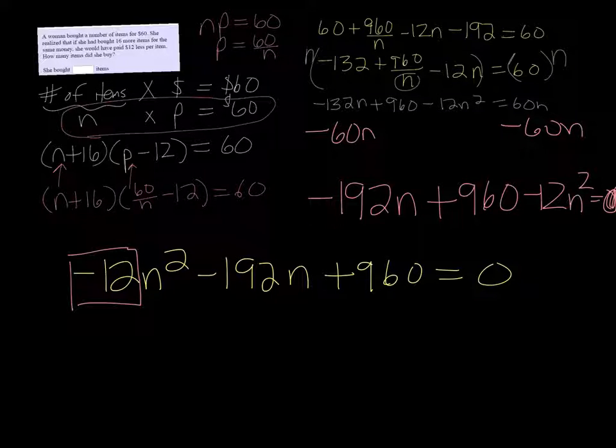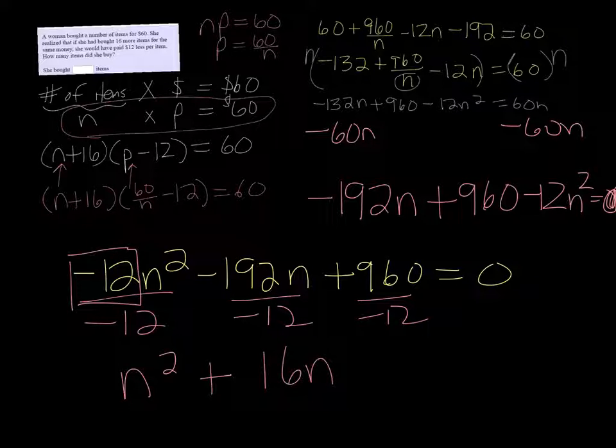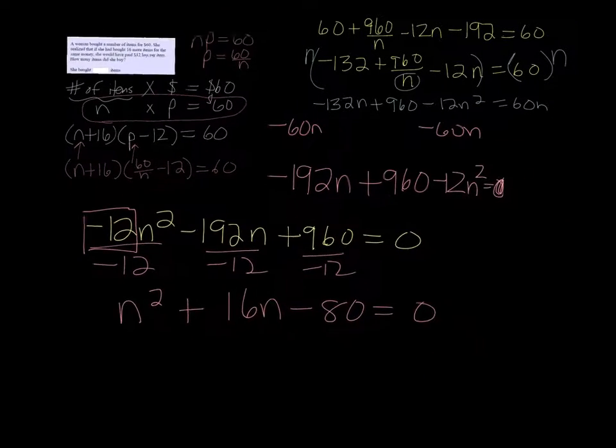I don't really want this negative 12 here, so maybe I can divide everything by negative 12, and it turns out in this case you can, so that makes it easier. I get N squared plus 16N minus 960 divided by 12, minus 80, equals zero. And now we have a much simpler quadratic equation to solve.